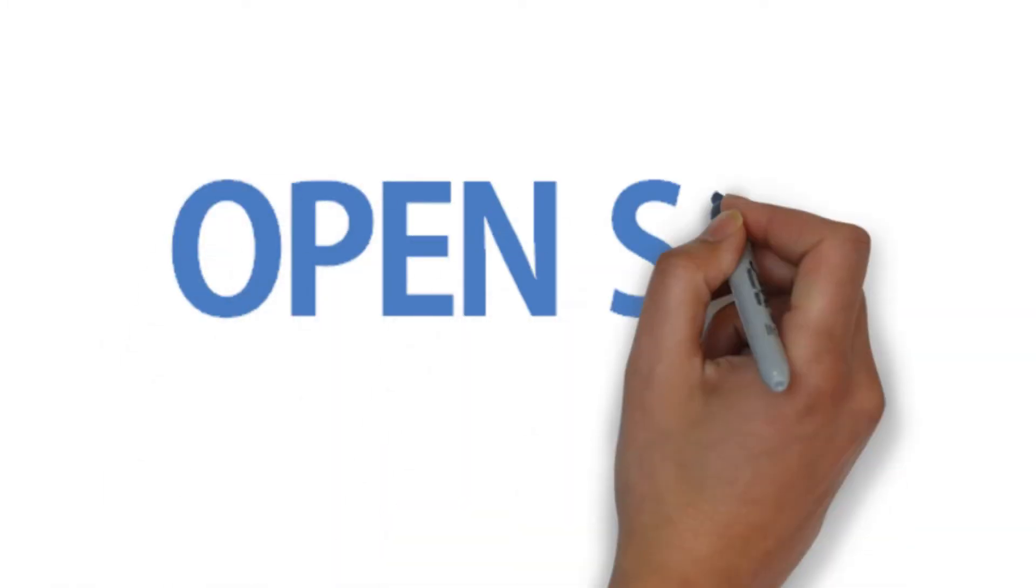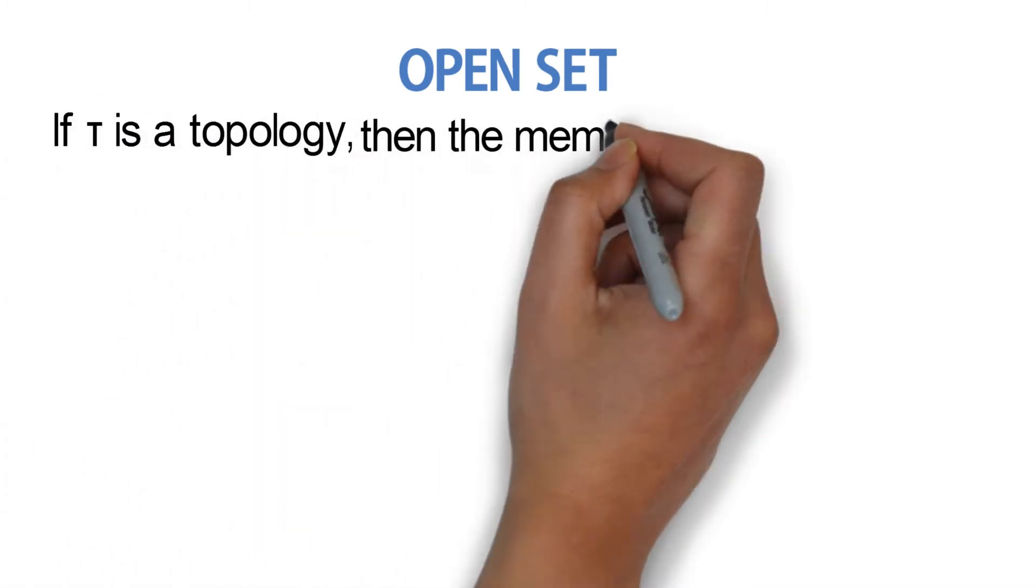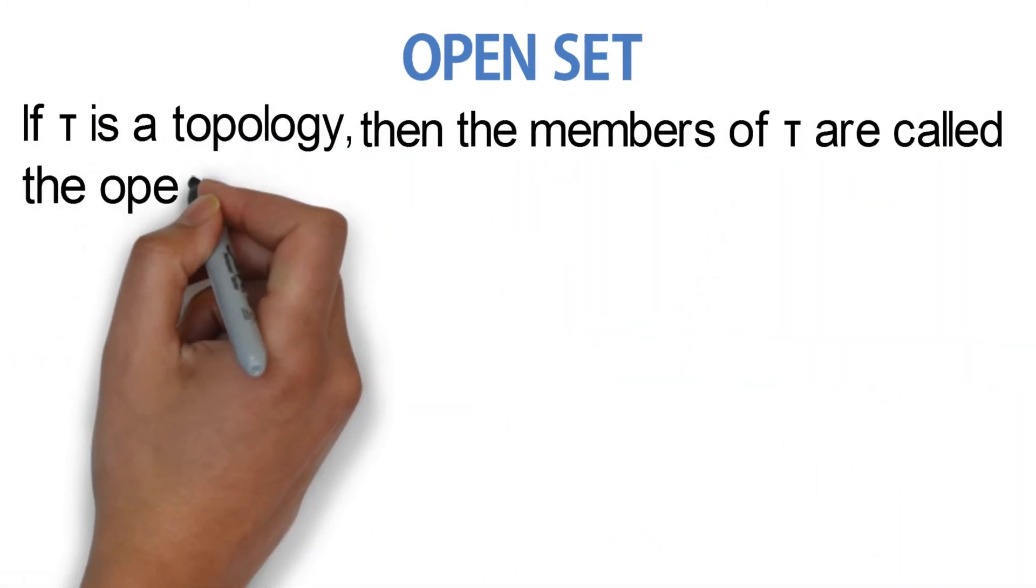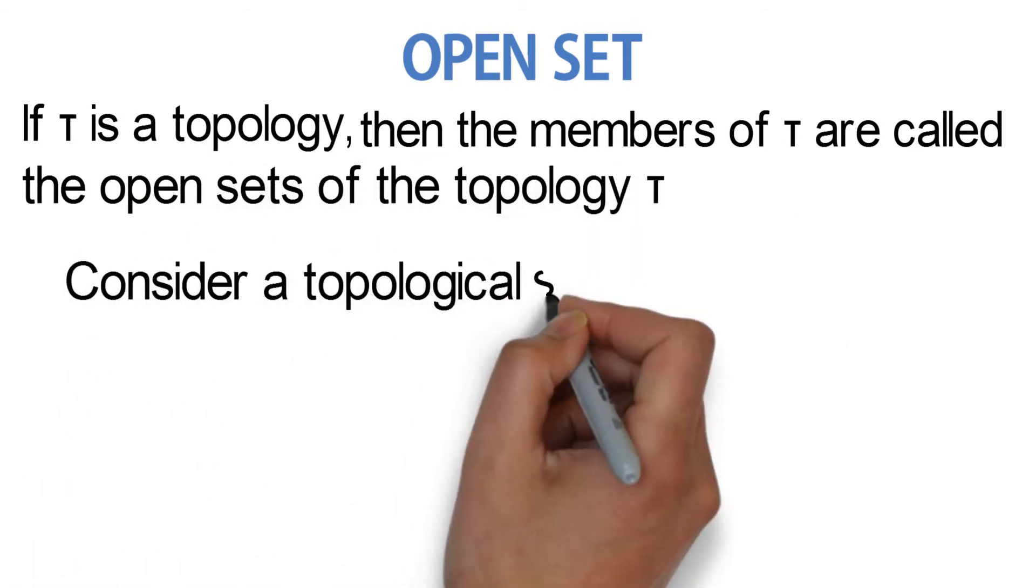We begin with the open set. If τ is a topology, then the members of τ are called the open sets of the topology τ.